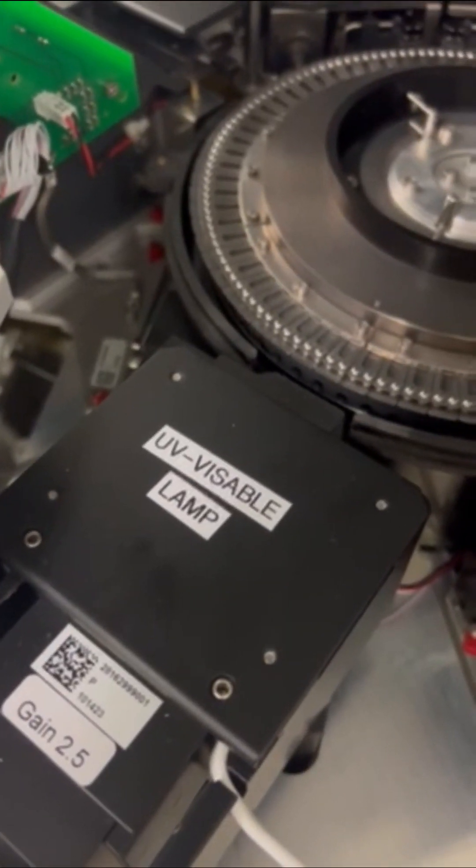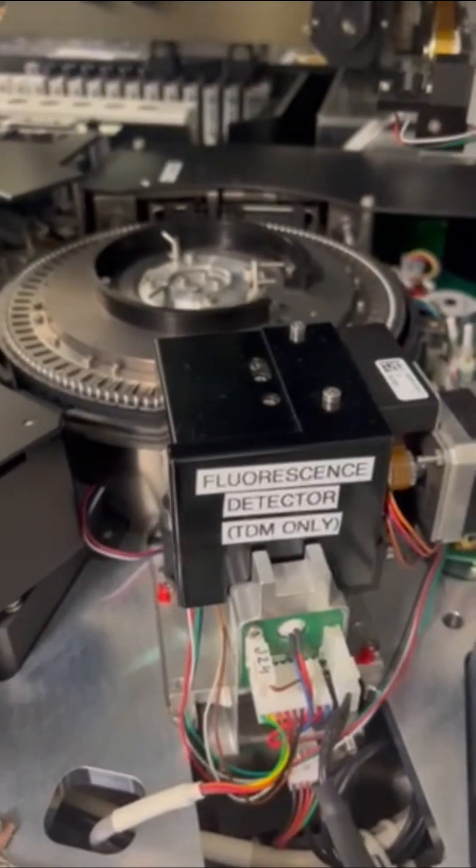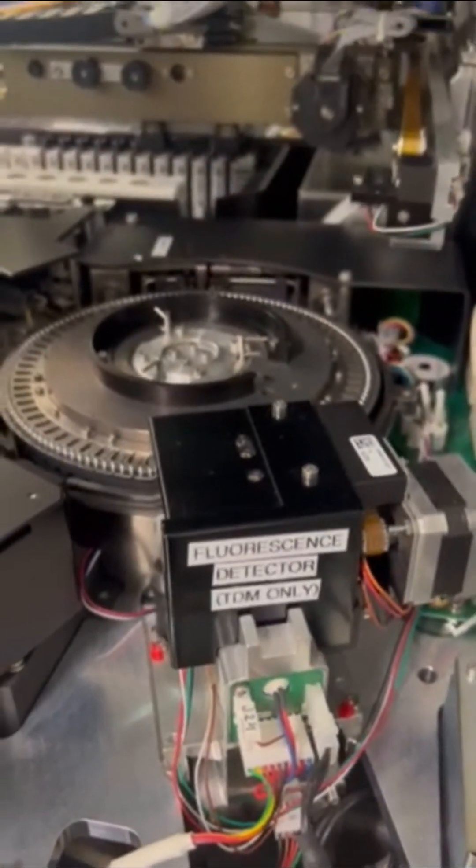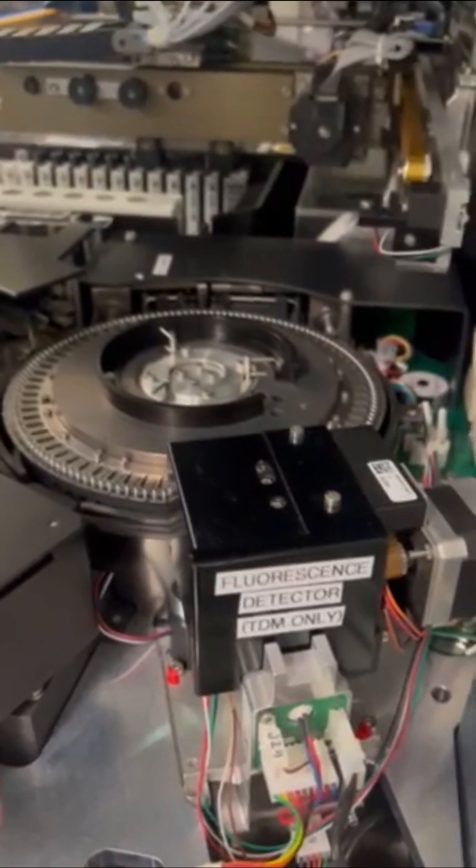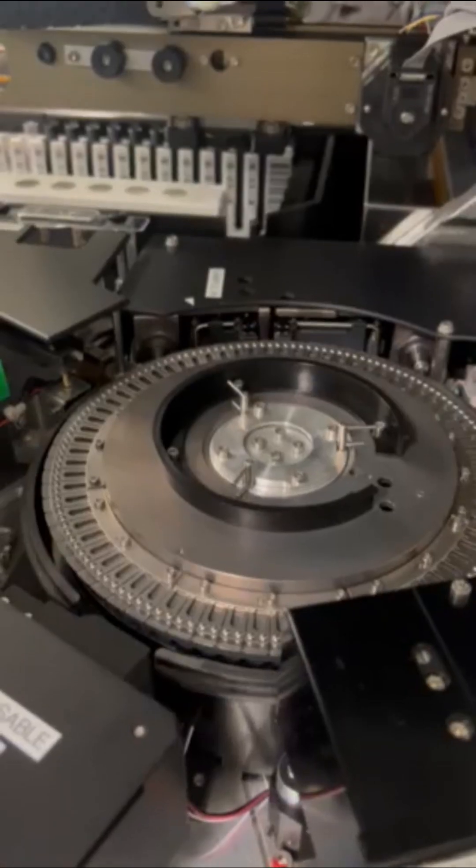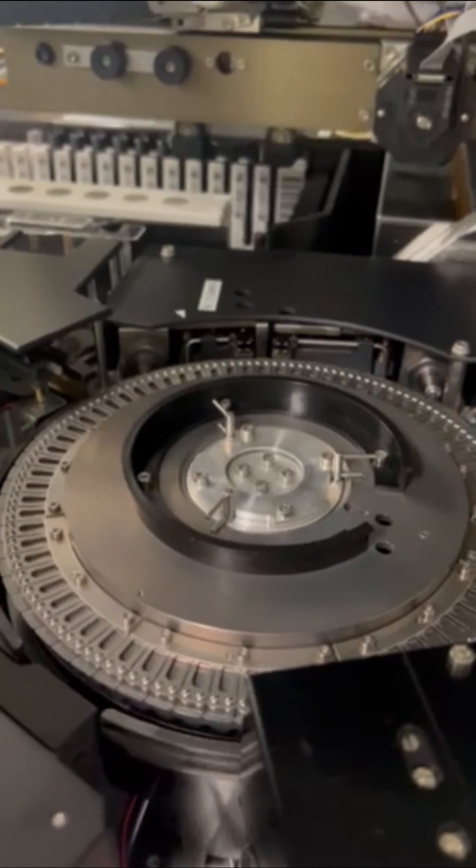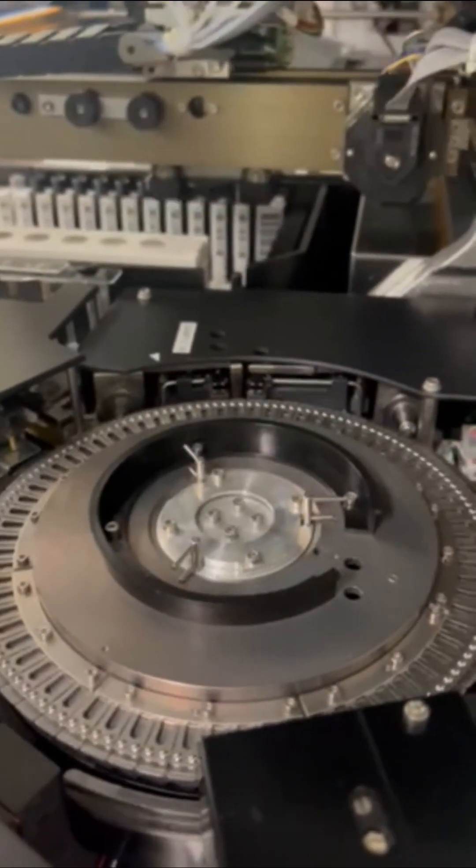Not only do we have a lamp but we also have a fluorescence detector which is used for therapeutic drug monitoring but we don't use those in Curtin University. Once the optics have a result they will send it through to the software where you will see it visually on the computer.